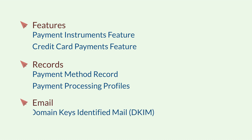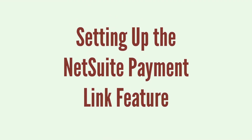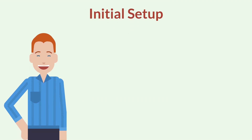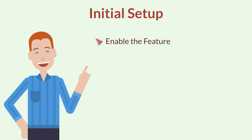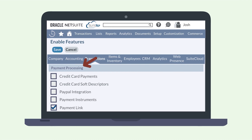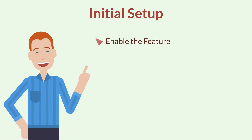And finally, you'll need to have Domain Keys Identified Mail, or DKIM, set up to ensure your email's authentication and enhanced deliverability. Once all the prerequisites are taken care of, here's what you'll need to do to set up the NetSuite payment link feature in your account. You can find the payment link feature on the payment processing section of the transactions tab of Enable Features. Select the checkbox and save the page.